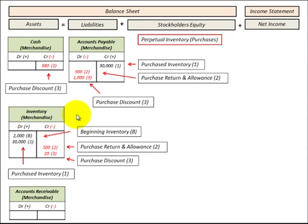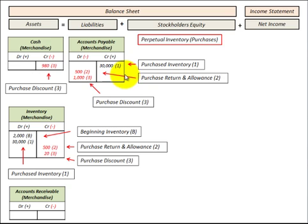The first method we're going to look at is recording our purchases directly to an inventory account, which is an asset on the balance sheet. Say we purchased $30,000 worth of inventory on account — we increase accounts payable by $30,000 and debit inventory to increase it by $30,000. If we then return $500 worth of inventory as a purchase return and allowance, we reduce accounts payable by $500 and also reduce our inventory by $500 with a credit.